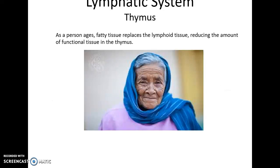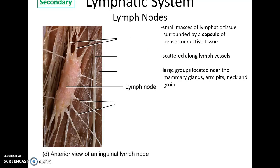As a person ages, the thymus slowly gets replaced with fatty tissue, reducing the function of the thymus and having an adverse effect on the person's specific immune response. Lymph nodes are secondary organs — small, bean-shaped structures along the lymph vessels. They have a capsule of connective tissue surrounding the lymphatic tissue and are located throughout the body, with large groups around the mammary glands, the armpits, the neck, and groin.